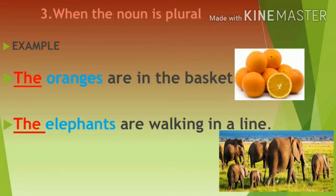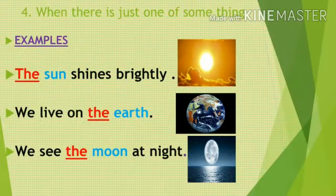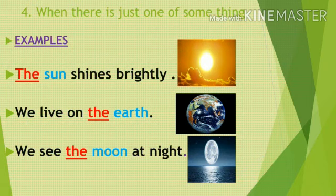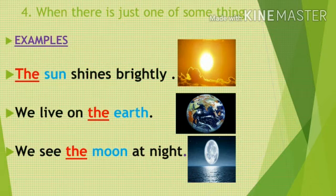For example: the oranges are in the basket. The elephants are walking in a line. Here the nouns oranges and elephants are in plural form, so we use THE before plural nouns. We also use THE when there is just one of something. For example: the sun shines brightly. We live on the earth. We see the moon at night. There is only one sun, earth, and moon, so we use THE before these nouns.